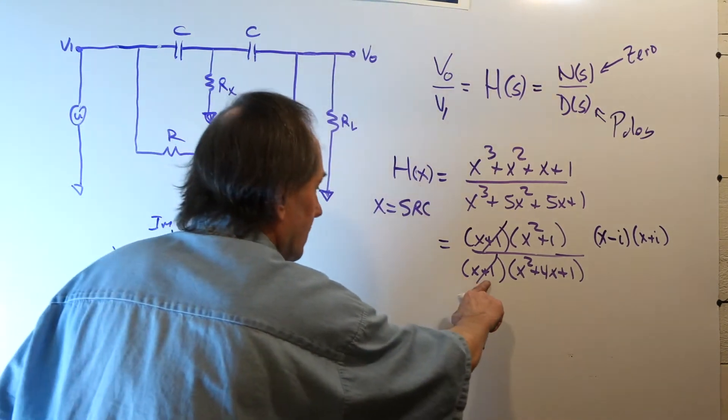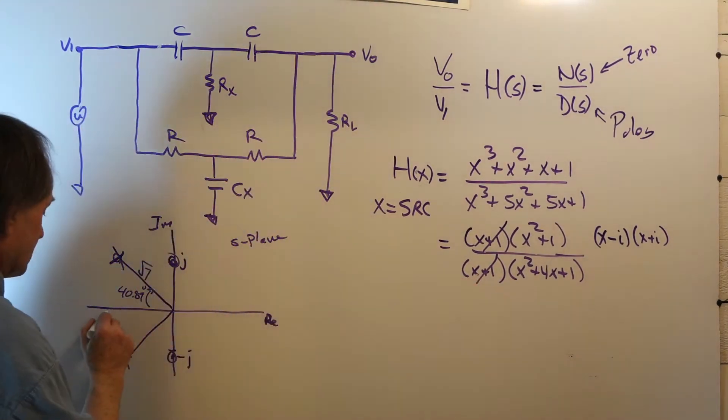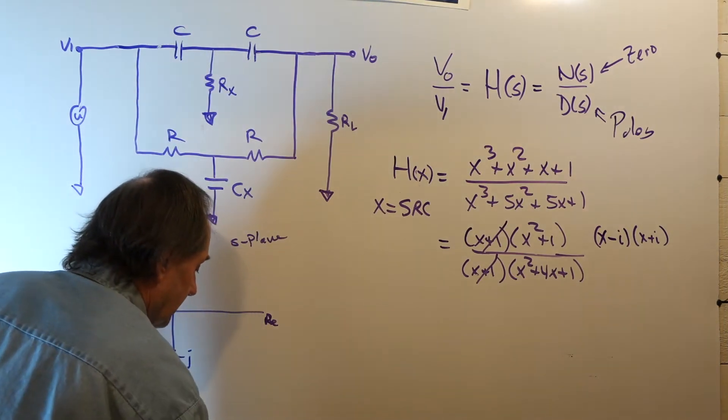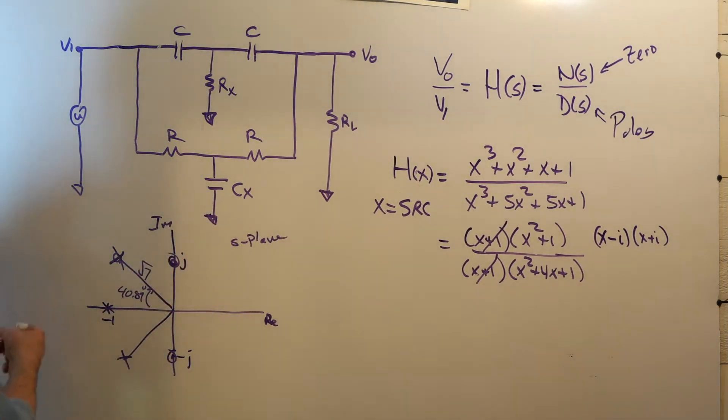And we have a pole at minus 1. But we also have a zero there, right on top of it, so they cancel.